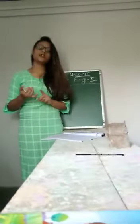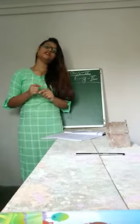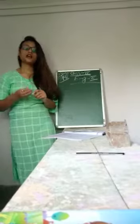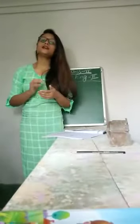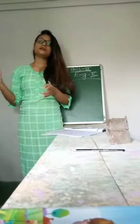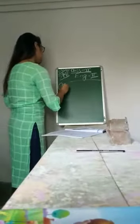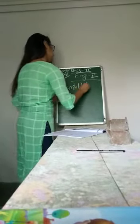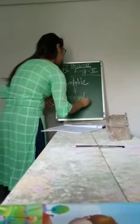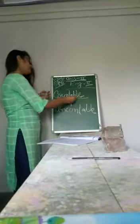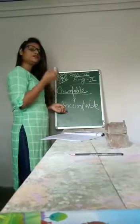Countable meaning: which we can count. Uncountable: which we cannot count. So noun means name — name of anything. Countable noun means the name of anything that we can count, and uncountable noun means the name of anything that we cannot count.